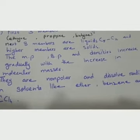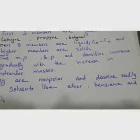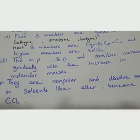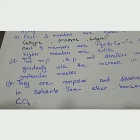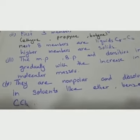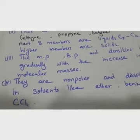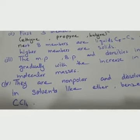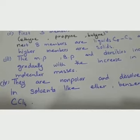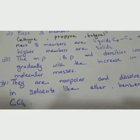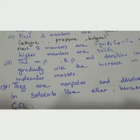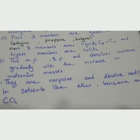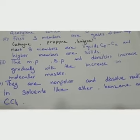Alkynes are colorless and odorless, except for acetylene which has a slight odor. As the carbon number and molecular mass increase, melting point, boiling point, and density all increase gradually. They are non-polar, just like alkanes.